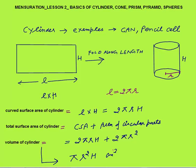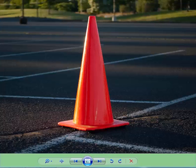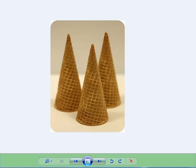The next solid is cone. Examples are ice cream cones — it is named so because it is in the shape of a cone. Traffic barricades are another example of cone. This is a traffic barricade in the shape of a cone, and ice cream cone as its name suggests is also in the shape of a cone. These are the practical examples of cone that you can see in real life.